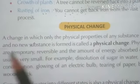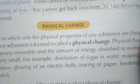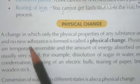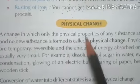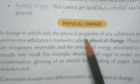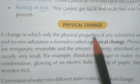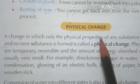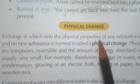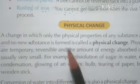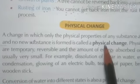Physical change: a change in which only the physical properties of any substance are changed and no new substance is formed is called a physical change. Only physical properties — like size, shape, color, and state — are the physical properties. So if only the physical properties of any substance change, and no new substance is formed, then we say that the change is physical.